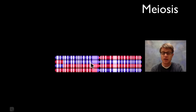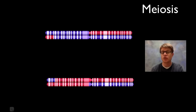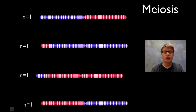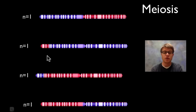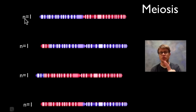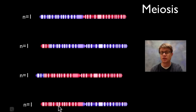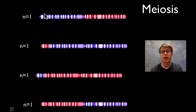After they've met in the middle, spindle fibers pull the homologous chromosomes apart in the first division. Then they pull apart again in a second division. The big difference from mitosis is that meiosis has two divisions instead of one. What we end up with is four haploid nuclei. We started with 2n equals 2, and now we just have n equals 1. Each of these nuclei has a different chromosome in it.